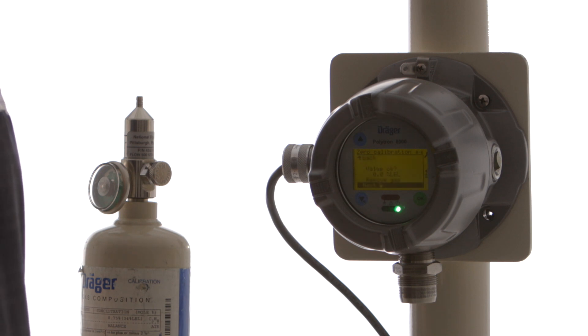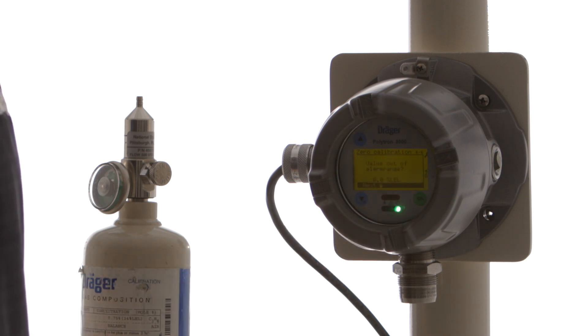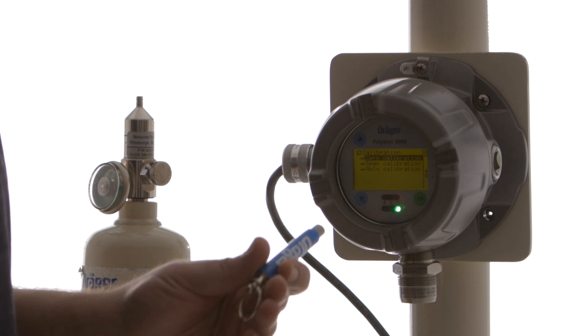And it's asking us to remove the gas. Obviously there is no gas to remove at this point. So we just hit next. And we're going to be out of alarm range since we're measuring 0% LEL. So we're going to select next. And now our zero calibration is done. We can move on to a span calibration.